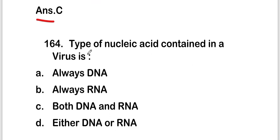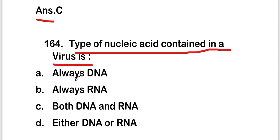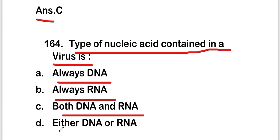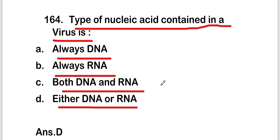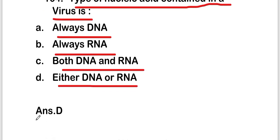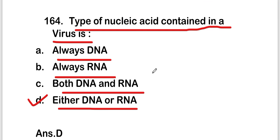Next question: the type of nucleic acid contained in a virus is — always DNA, always RNA, both DNA and RNA, or either DNA or RNA. The right answer is option D — either DNA or RNA. So a virus contains either DNA or RNA.